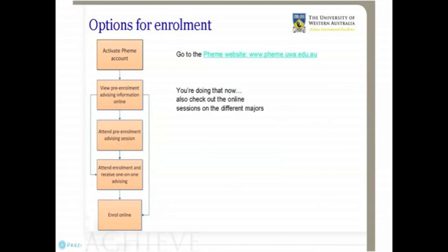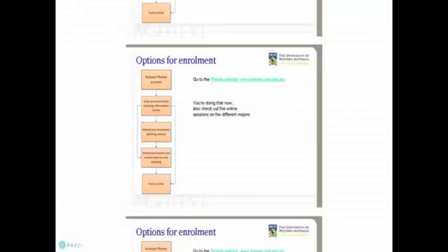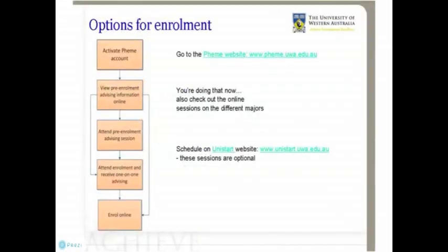This presentation that you're watching now has five chapters and there are other presentations on the different majors across the university, also on the UniStart website. But if I look at all of this material and I'm still confused, what do I do? Well, then it would be a good idea to come along to our pre-enrolment advising sessions on campus, where you'll have the chance to go to lots of talks and ask questions of student advisors. The schedule for these is on the UniStart website.